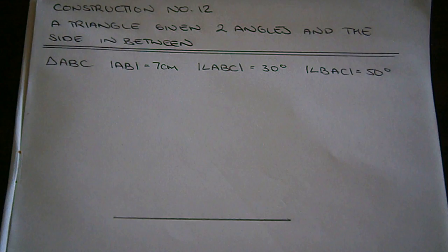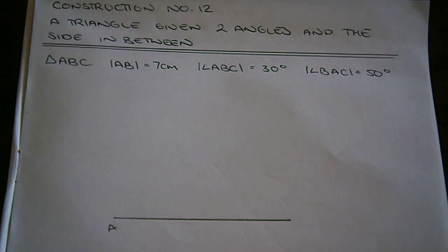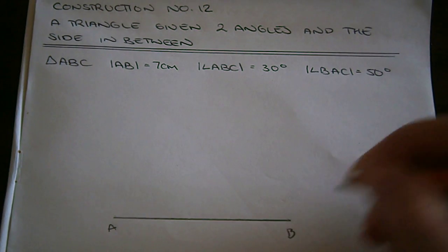Next we use our protractor to measure our angles, so if we call this side, this end A, this end B.